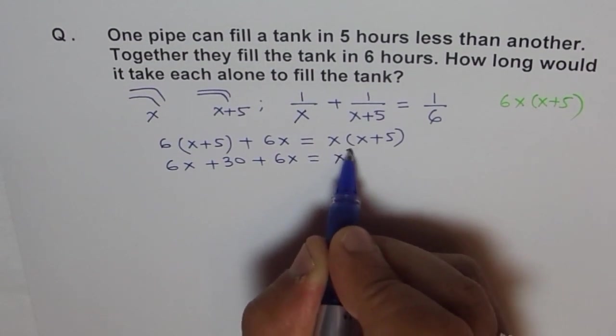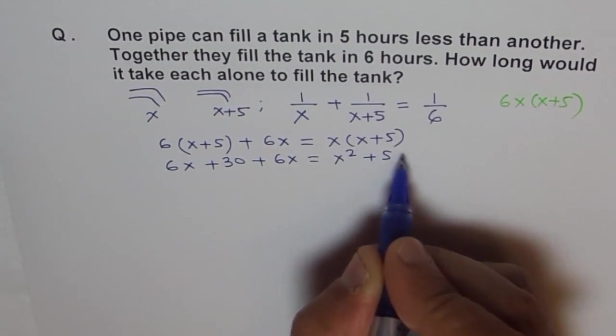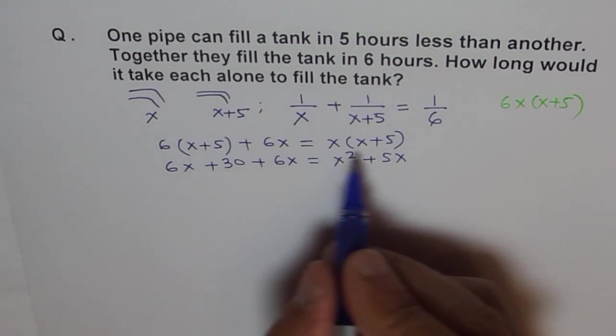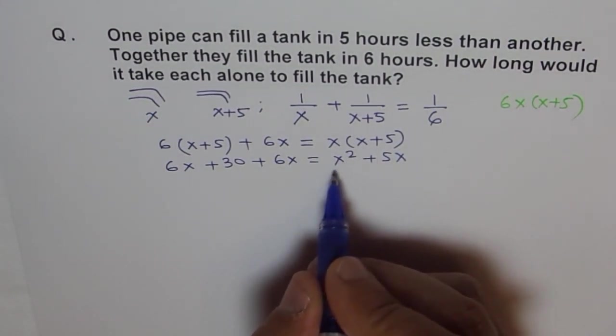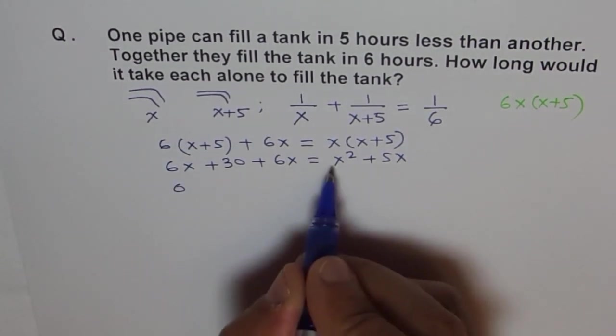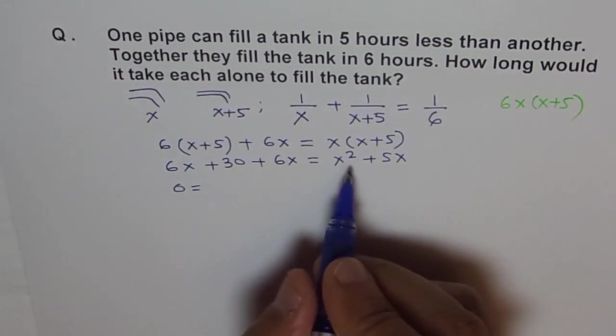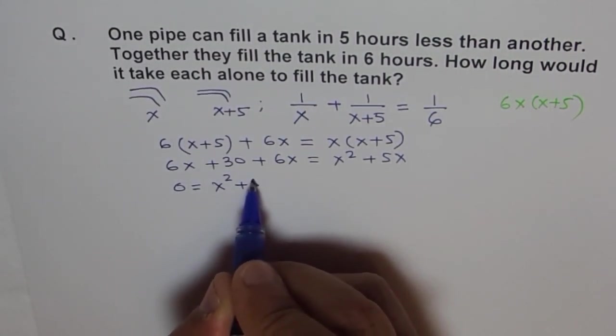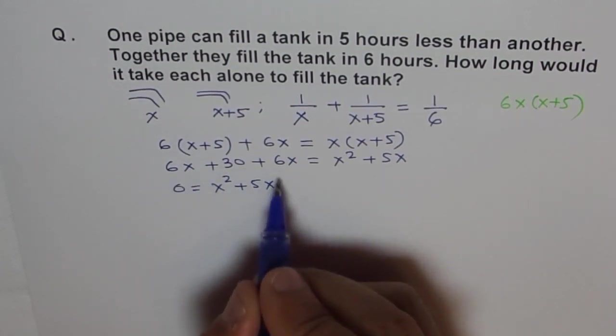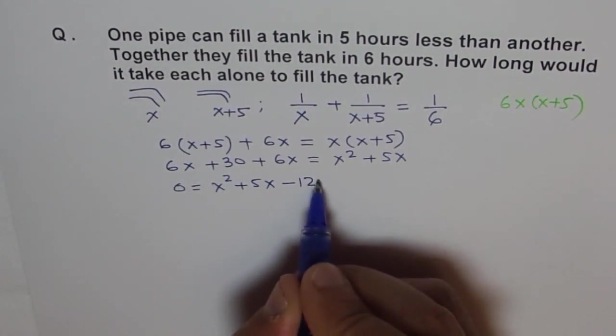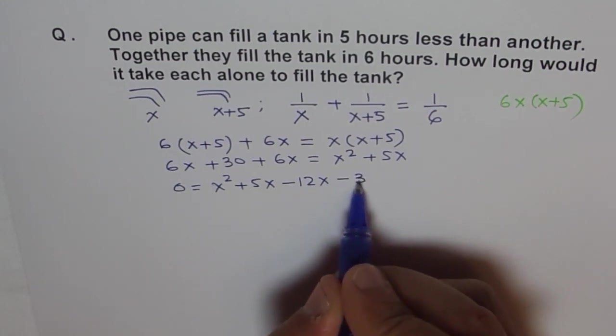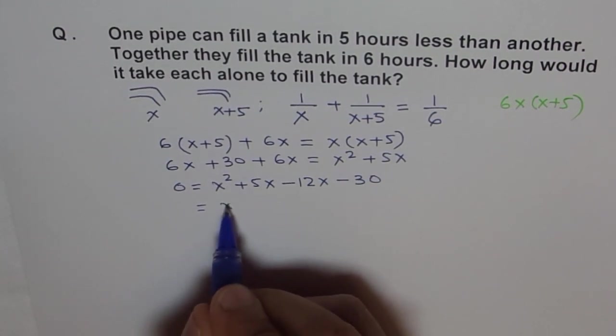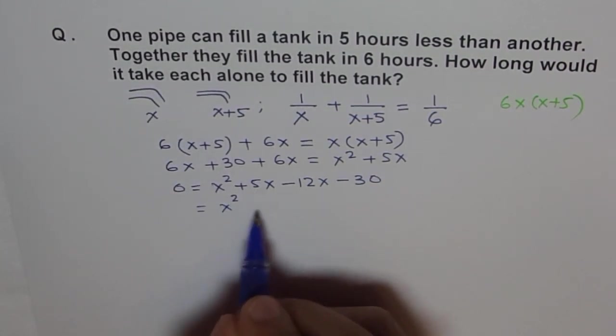Let's expand this. We get 6x plus 30 plus 6x equals to x squared plus 5x. Let's bring all the terms together. I'll prefer to take these terms on that side. I need to keep this positive - it's good to keep the coefficient of x squared positive. So I'll write x squared plus 5x, and these are 6 and 6, 12, so let me take 12x minus, and this is minus 30 for me.